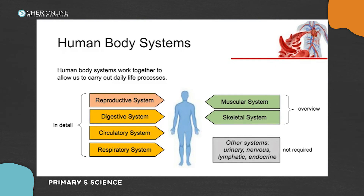There's the urinary system, also called the excretory system, the nervous system, the lymphatic system, the endocrine system, the immune system, and more. We obviously don't have time to cover all of these, but if you want to study to be a doctor you will be forced to study all of them in detail. For us at this level, we're only looking at four in detail, plus the muscular and skeletal very briefly.